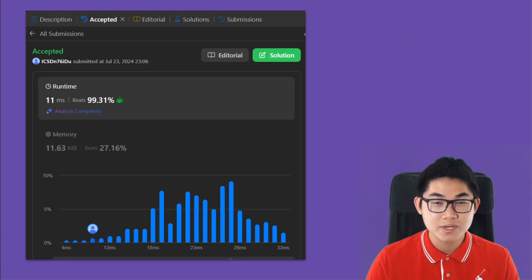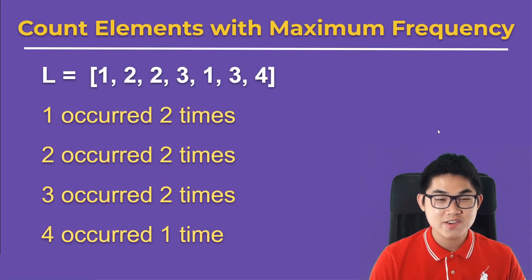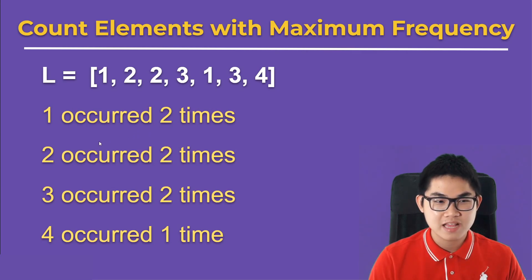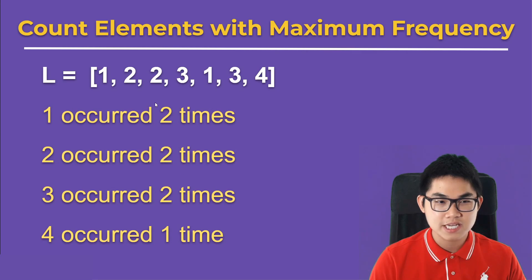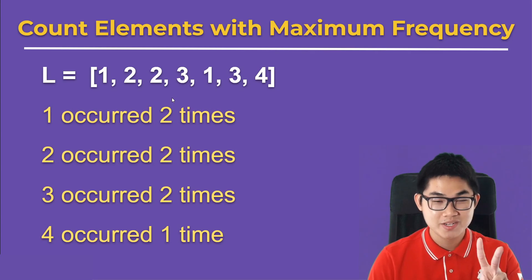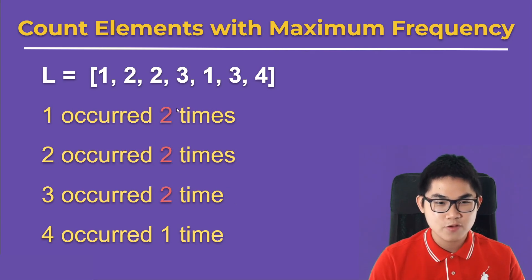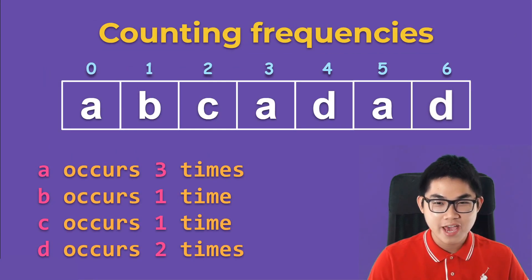I'm going to show you my code that is accepted on LeetCode. If you look closely, you can see that the number 1 occurred two times in this list, and same with number 2 and number 3. For number 4, it occurred only one time. These are the frequencies of each number, and the maximum frequency is two. If you add all those together, you get six — and that is the output.